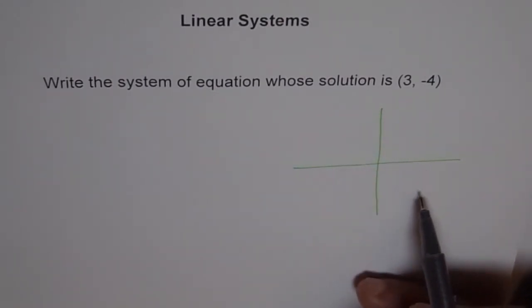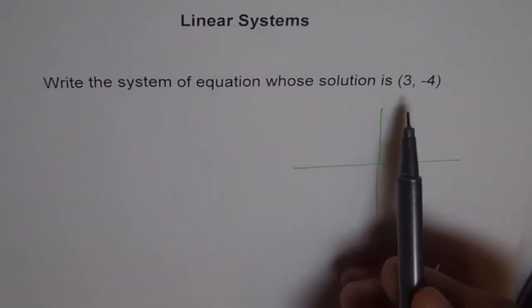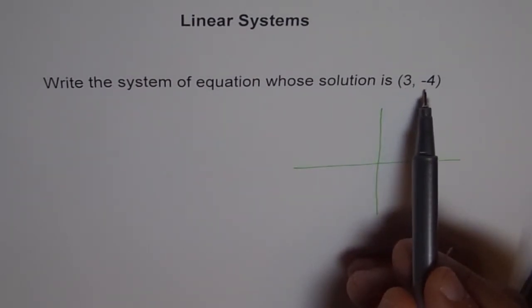So that means 3 and minus 4 somewhere here. Now, to me, the best possible solution is two lines. One whose equation is x equals 3 and the other whose equation is y equals minus 4.